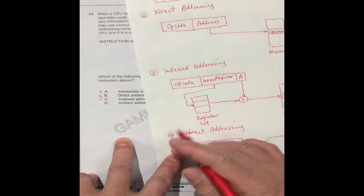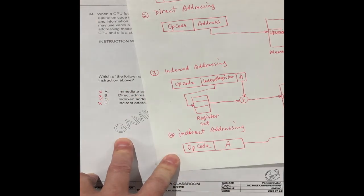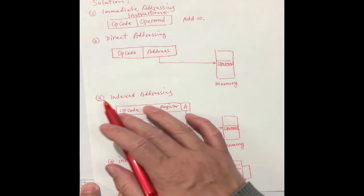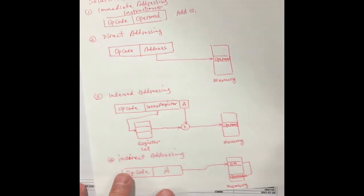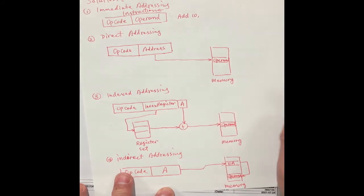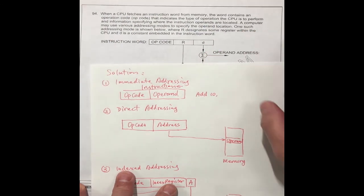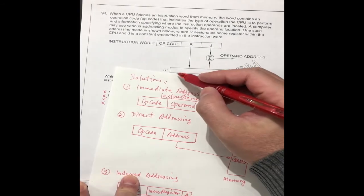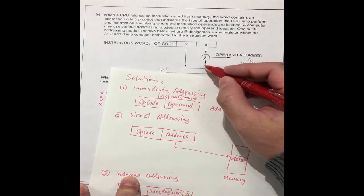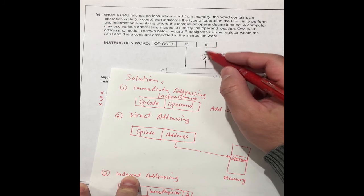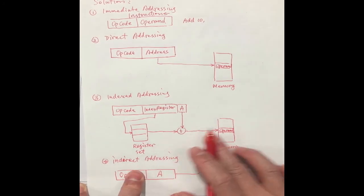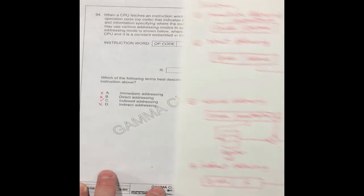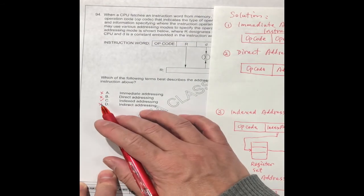So we can say the correct answer should be C, indexed addressing. It goes to the indexed register. This is here, the register. And it goes to the register state here. And with the embedded D to the operation here, then find the operating address like this. So the correct answer is C.